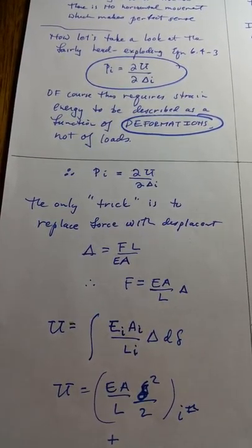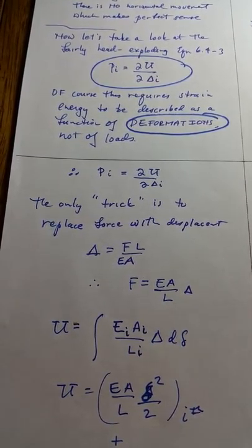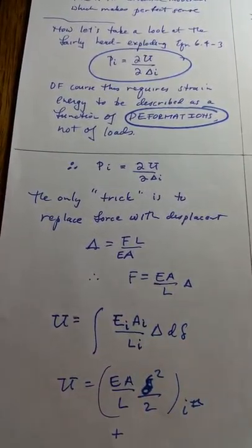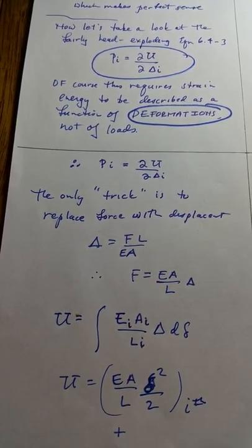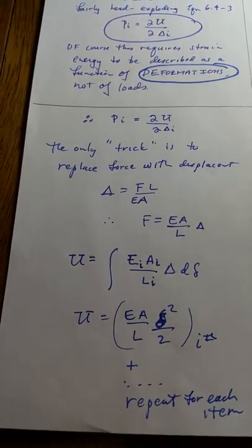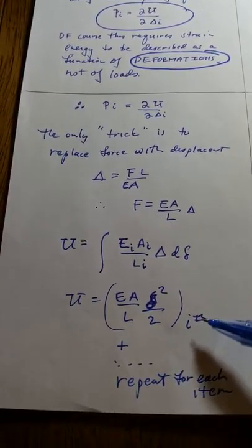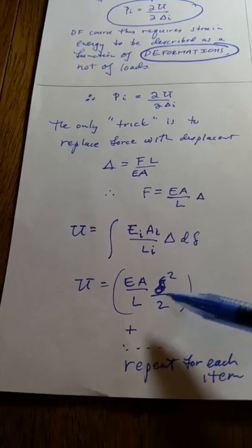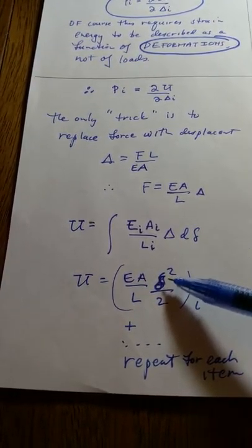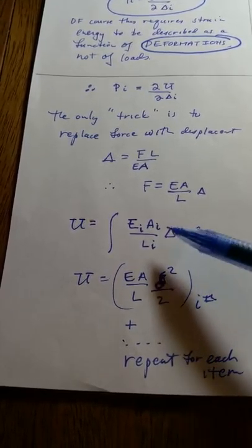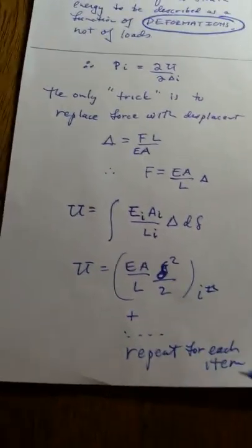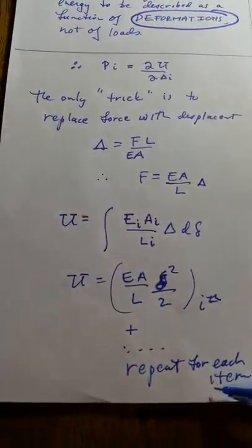And what I had before was replaced by the new expression here, ea over l times delta times d delta. And the ith strain energy, when I integrate it, is ea over l delta squared over 2. And I'm mixing up my delta. And you repeat that for the each of the axial items here.